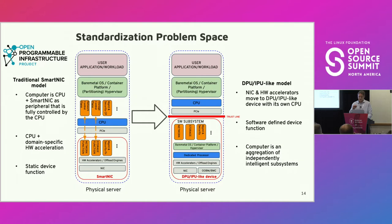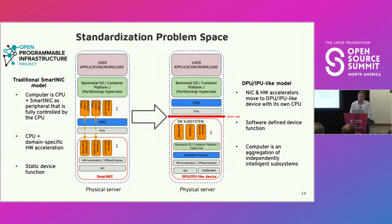You couldn't really do this with a SmartNIC, because the SmartNIC booted up and was part of the system. Another nice side effect of this separation is that these new devices have a whole bunch of special hardware to accelerate common functions — accelerating networking, making it programmable, high-speed crypto, compression. Within OPI, we can create APIs specific to those special accelerators without having to run that special accelerator software on the host itself. We can keep it in the walled garden of the IPU/DPU, making it simpler to standardize and adopt.